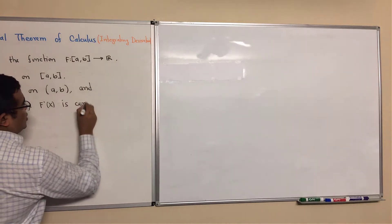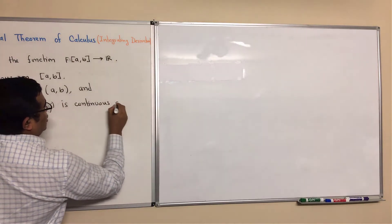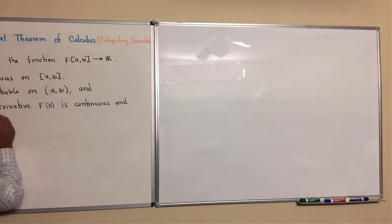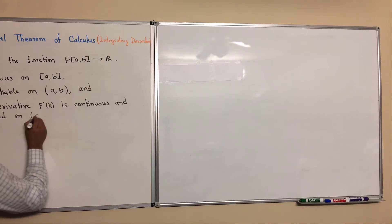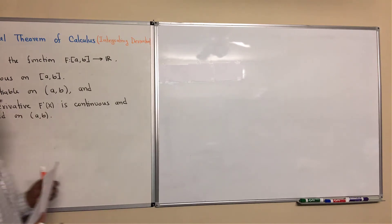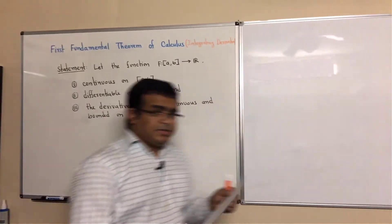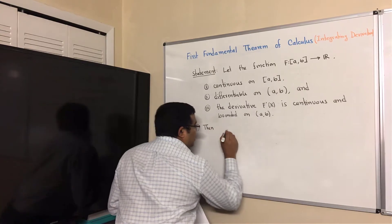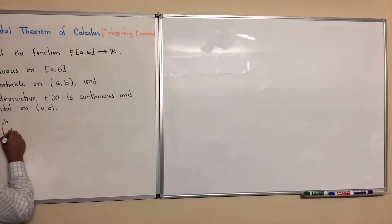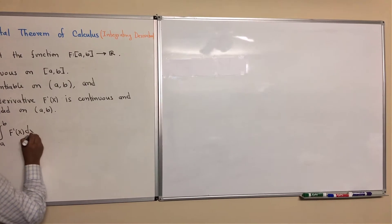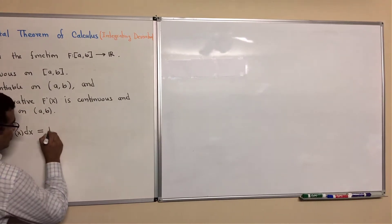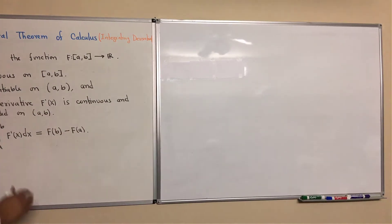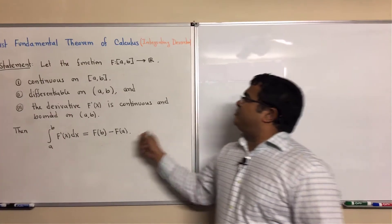And F prime of x is bounded on [a, b]. Then the conclusion is: the integral from a to b of F prime of x dx equals F of b minus F of a. So this is the First Fundamental Theorem of Calculus.